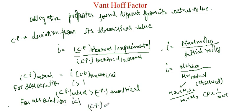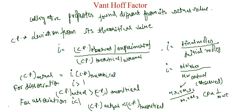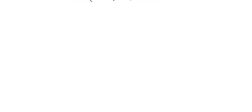For association, i is less than 1, and the actual colligative property is less than the theoretical colligative property. An example: H2 plus I2 gives 2HI — but that is not an association example, i equals 1 there. For association, we take the reverse equation.